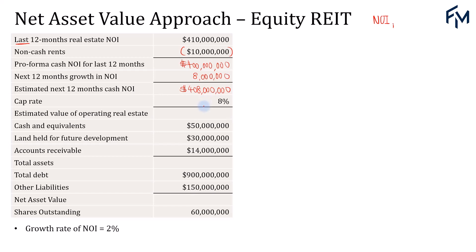To find the estimated value of the operating real estate, we take the net operating income for the coming year divided by the cap rate. Dividing 408 million by 8% gives us 5.1 billion dollars.